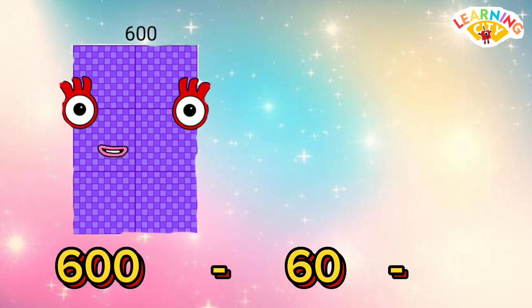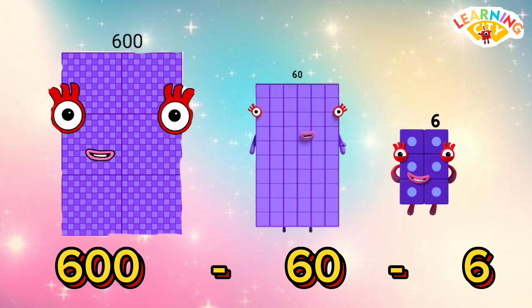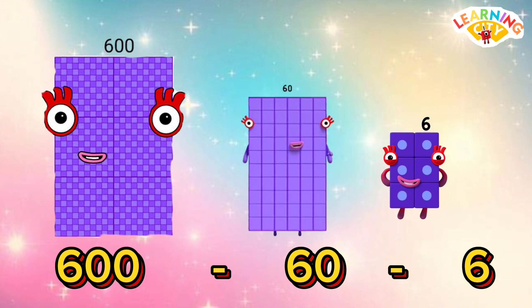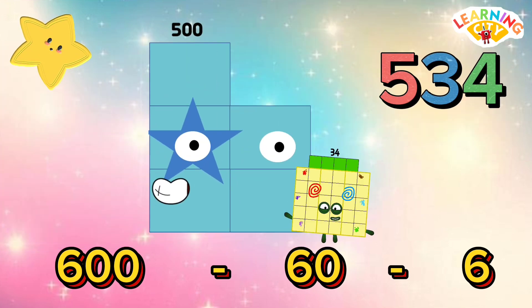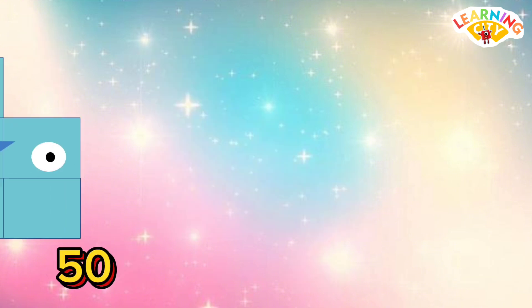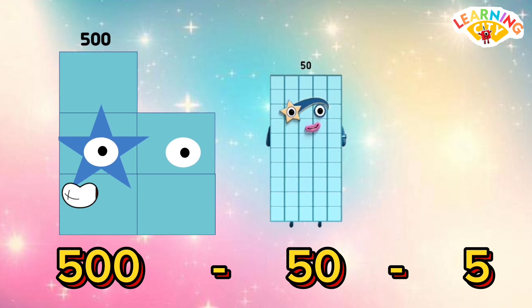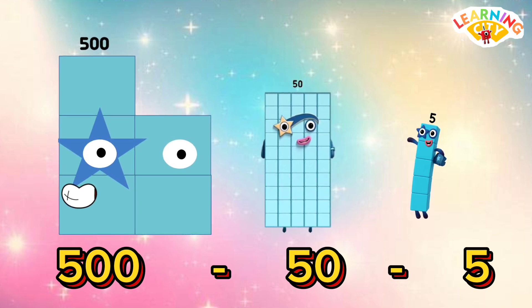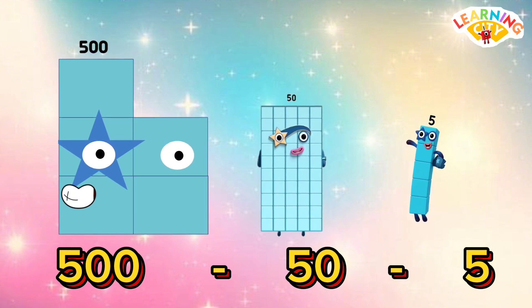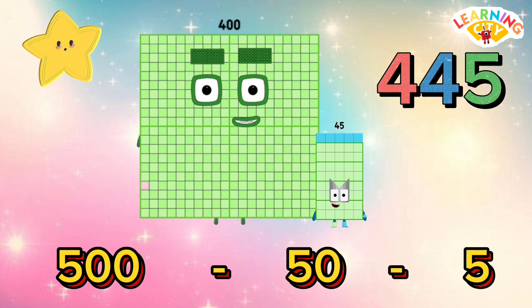600 minus 60 minus 6 is equals to 534. 500 minus 50 minus 5 is equals to 445.